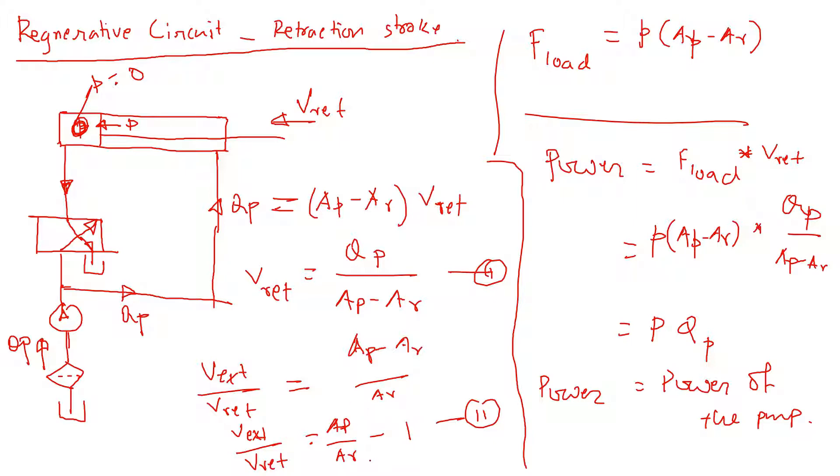If the piston area is twice as large as the rod area, then the extension and retraction speeds will be the same. So we can change the piston area to control the velocity we want for extension and retraction. That's the purpose of this equation.